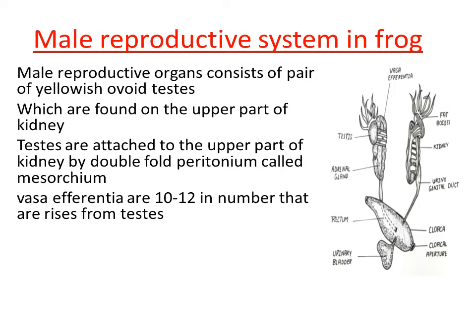These are tubular structures — nearly 10 to 12 of them come out from the testes. The function of vasa efferentia is to carry the sperms produced in the testes towards the further part of the reproductive system. They are nearly 10 to 12 in number, and their main function is to carry sperm from the testes.